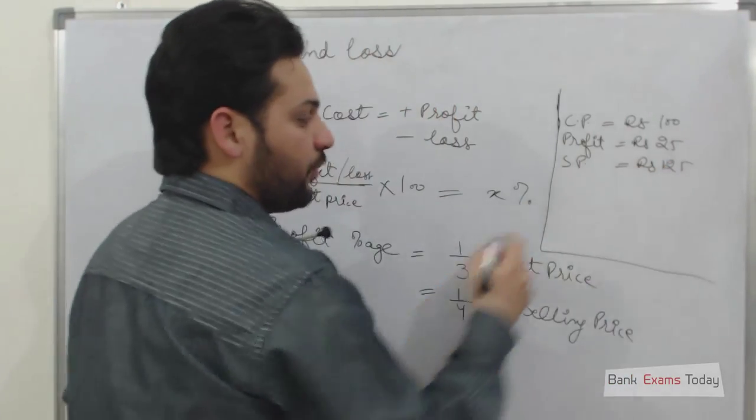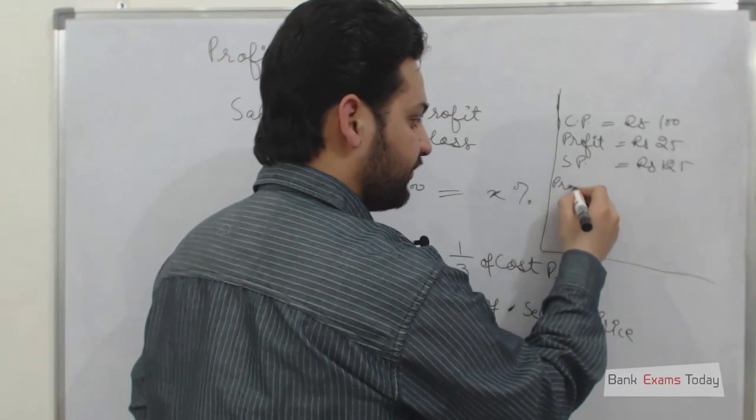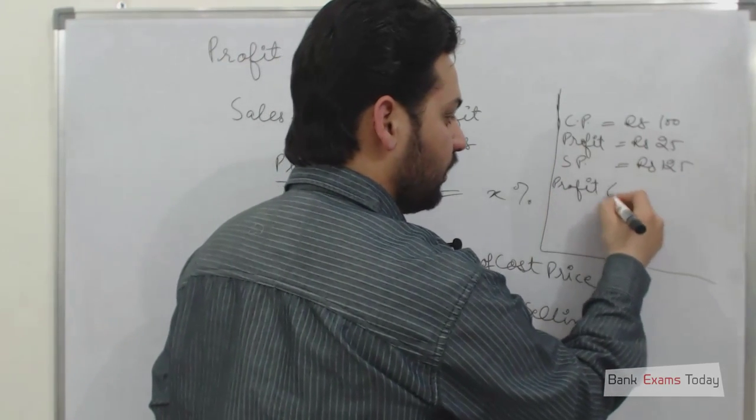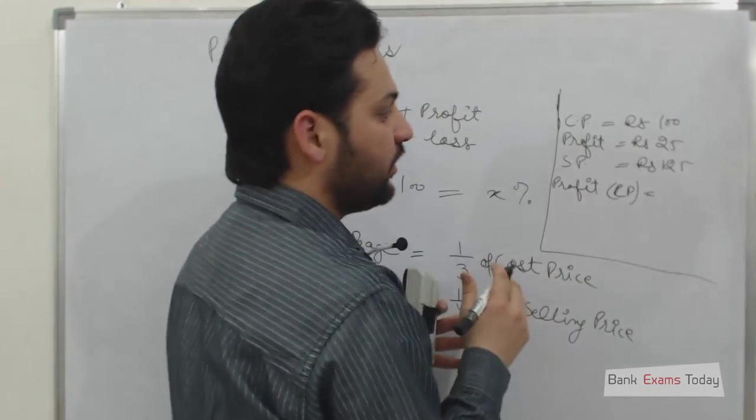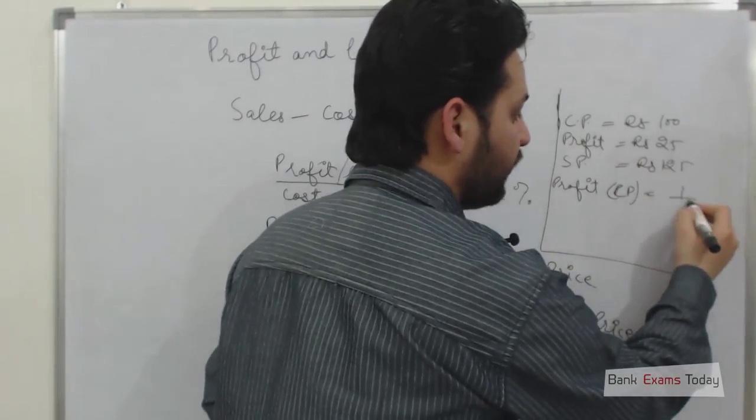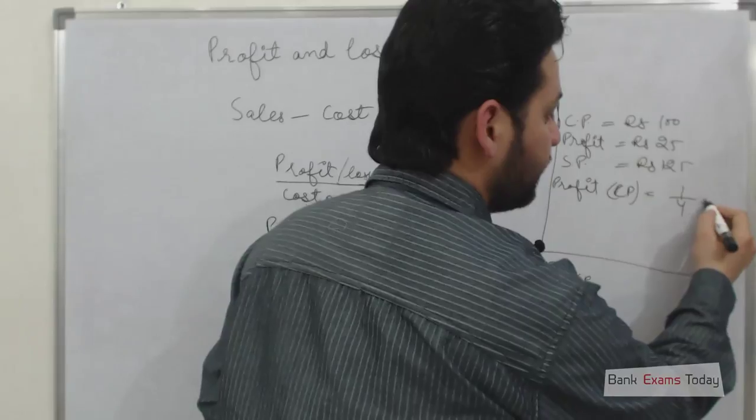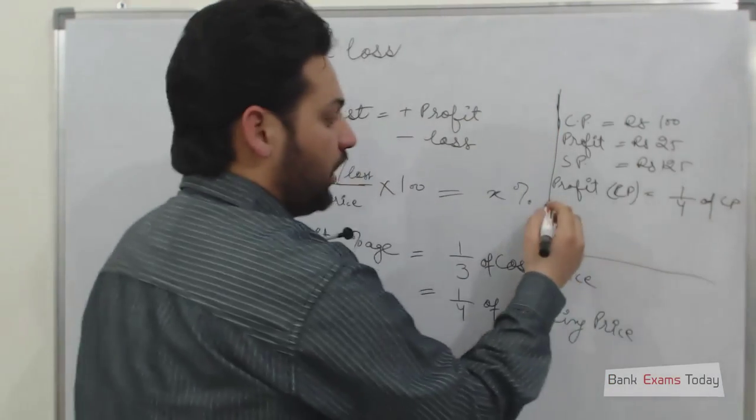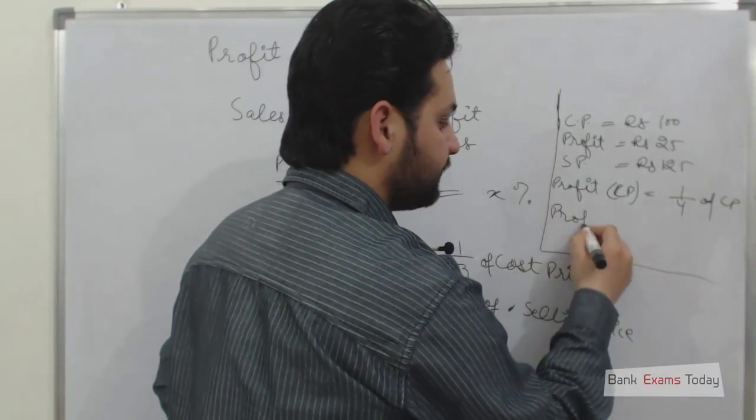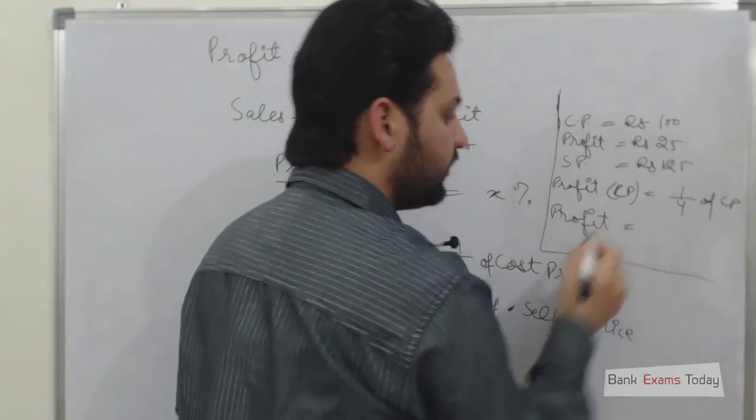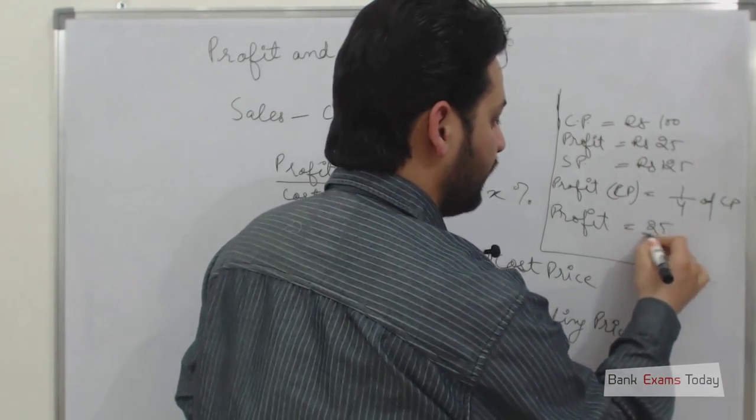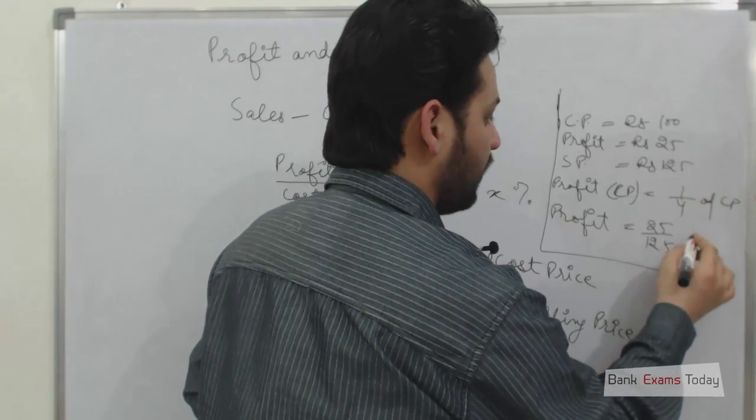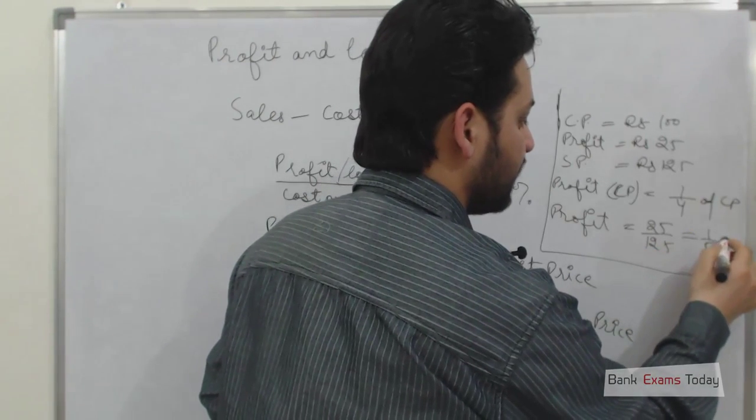The profit as a percentage of cost price will be, or if we calculate it in fraction, it will be one fourth, one fourth of CP, cost price. And for selling price, if we calculate it in the terms of selling price, it will be Rs. 25 over 125 or one fifth of selling price.